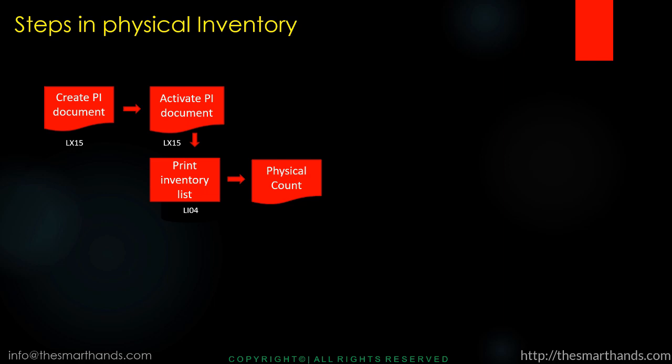One important thing: when we print the inventory list, SAP will never print the quantity mentioned in the SAP system. It will only print the bin number, storage type number, and material codes — but never display the SAP quantity. This is intentional, so the warehouse person doing the physical count doesn't get any hint from the system. We just give them a blank paper with no quantity, and they go and check the real quantities themselves.